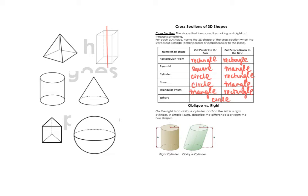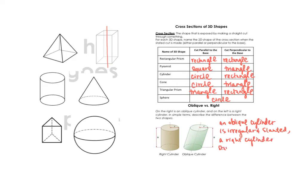Another property of three-dimensional shapes: on one side is an oblique cylinder and on the other is a right cylinder. The only difference is that an oblique cylinder is slanted and irregular, while a right cylinder stands straight up and down. We can use the words oblique and right to describe any type of three-dimensional shape.